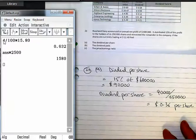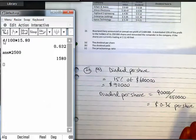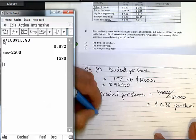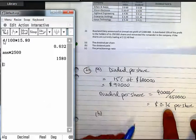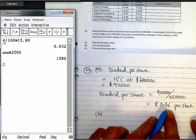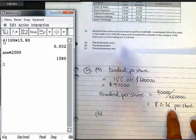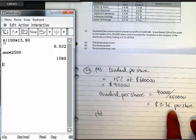Now, we're asked to calculate a dividend yield. The dividend yield is the dividend paid out, which is 36 cents a share, divided by what the shares are currently trading at.